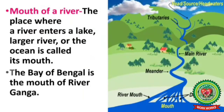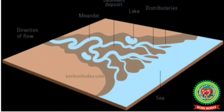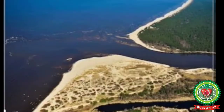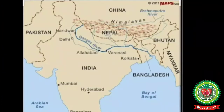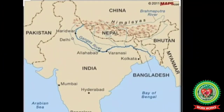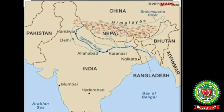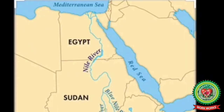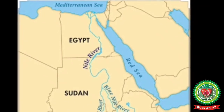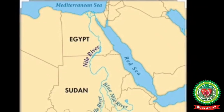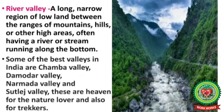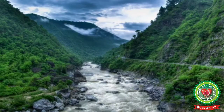The Gangotri Glacier is located in the western Himalayas in the Indian state of Uttarakhand. Mouth of a river — the place where a river enters a lake, large river, or the ocean — is called its mouth. For example, the Bay of Bengal is the mouth of the River Ganga and the Mediterranean Sea is the mouth of the River Nile. River valley — a long, narrow region of low land between ranges of mountains, hills, or other high areas, often having a river or stream running along the bottom.